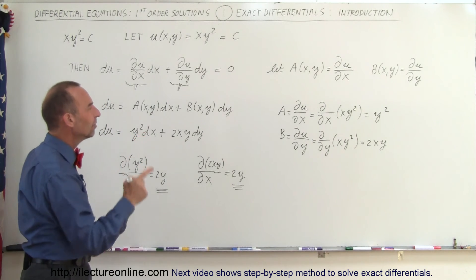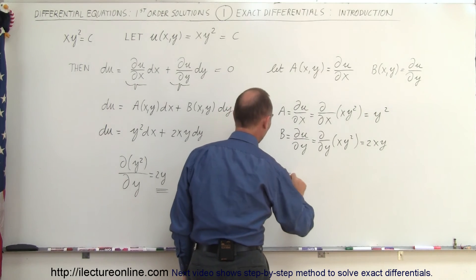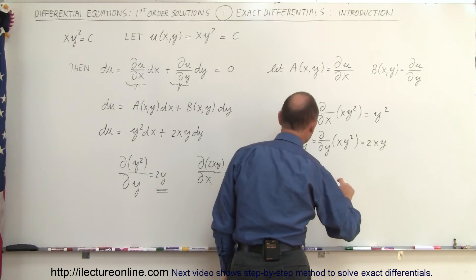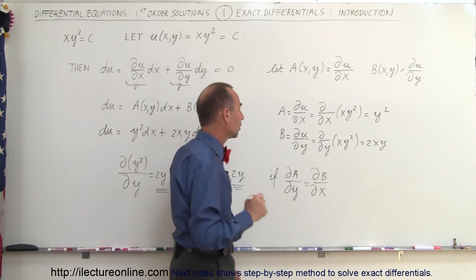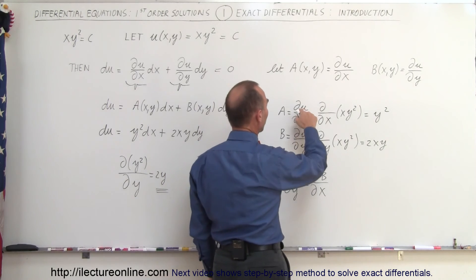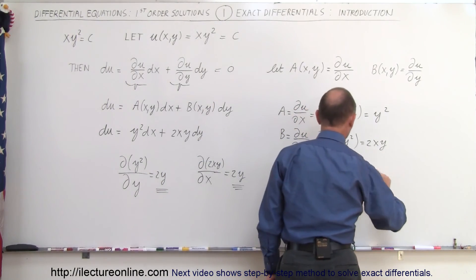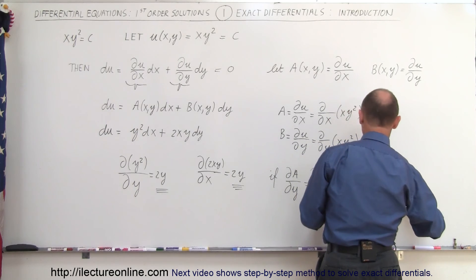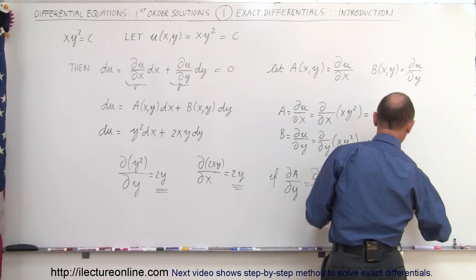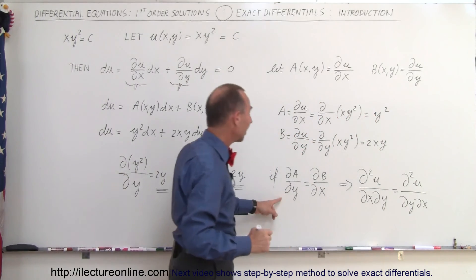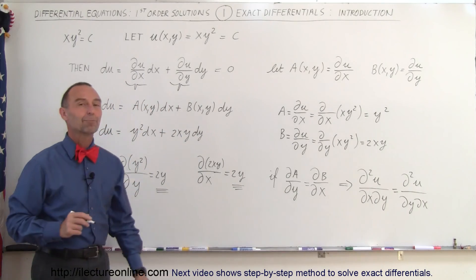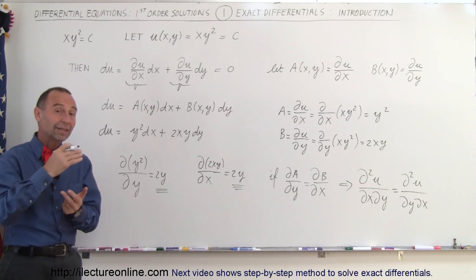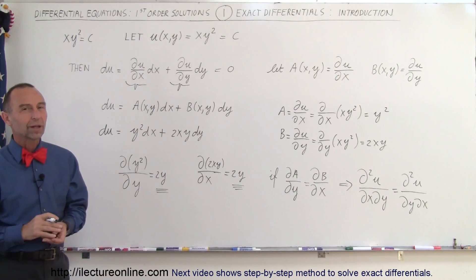What this really means is that if the partial of a with respect to y equals the partial of b with respect to x, then we have an exact differential and can solve the equation that way. Since a is the partial of u with respect to x, this means the second partial of u with respect to x and y must equal the second partial of u with respect to y and x. If that's the case, we can employ that method. Now let's take a closer look at the methodology of how to actually solve the equation, then we'll do some examples.